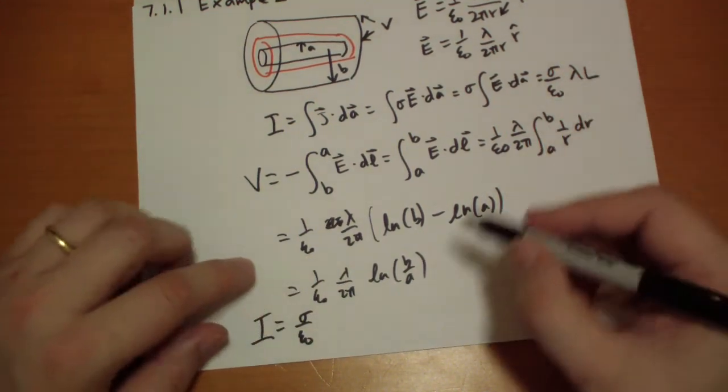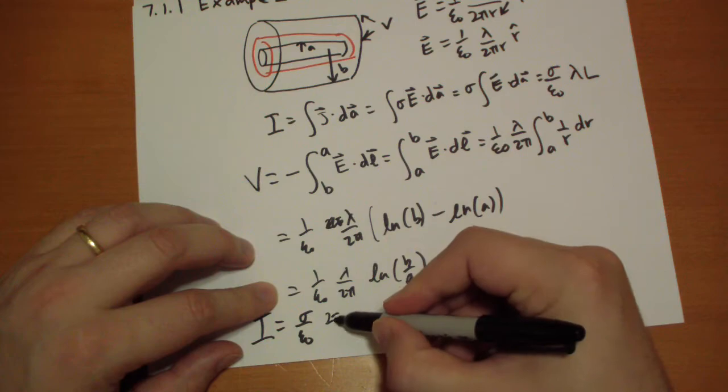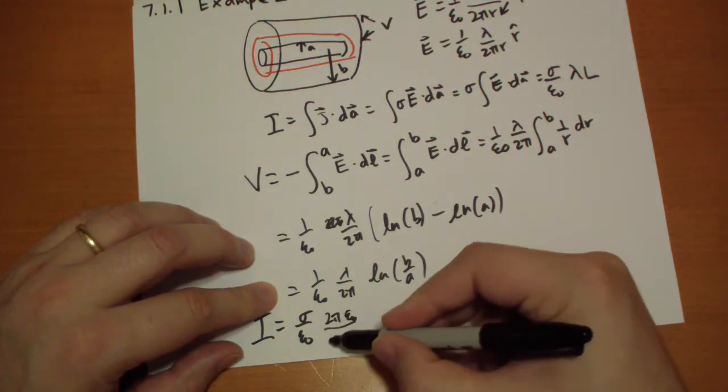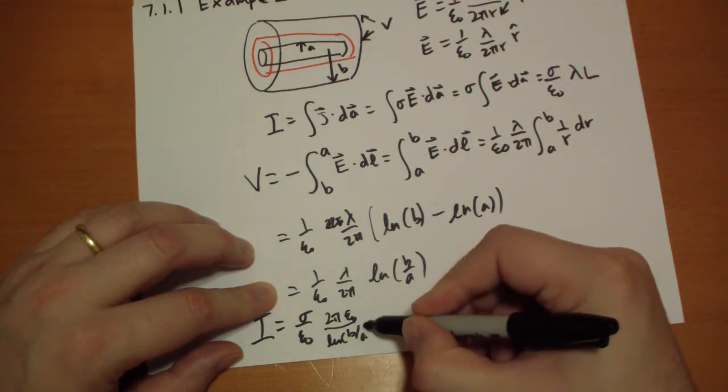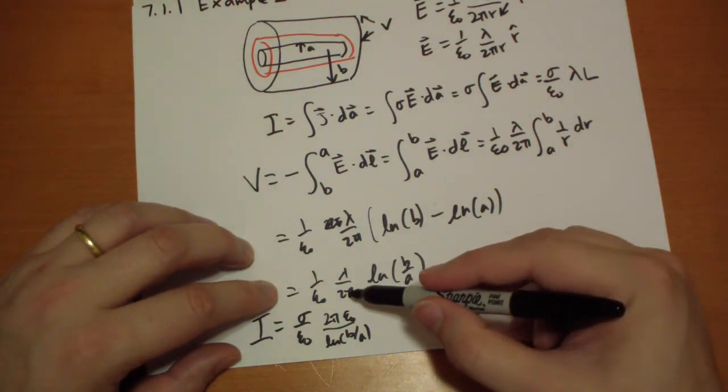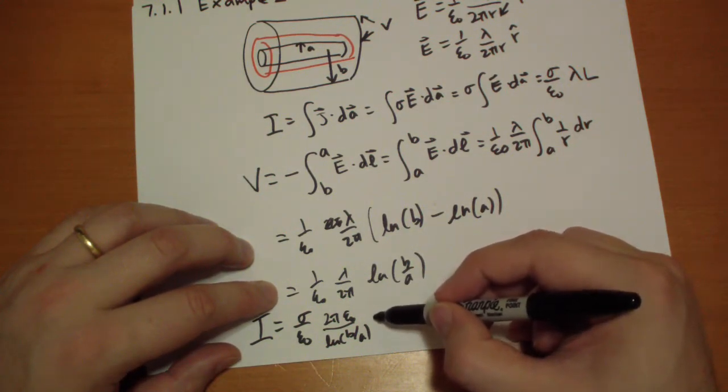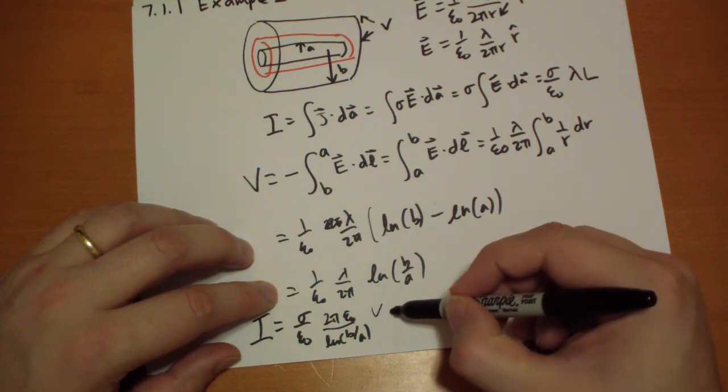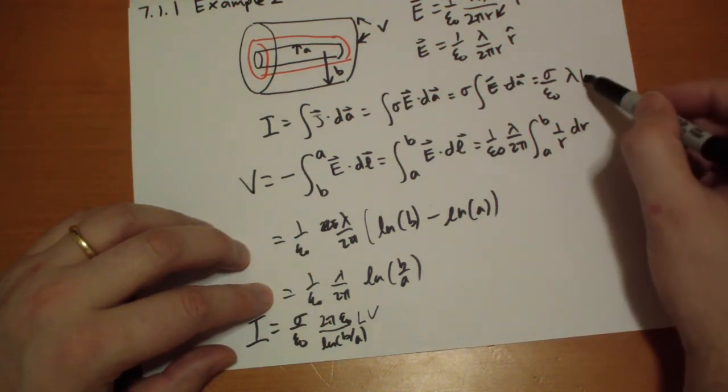There's going to be a V at the end. We're going to have 2π on the top. We're going to have epsilon on the top. We're going to have log of B over A on the bottom. And then we have a V. And we have an L. The L comes from right here.